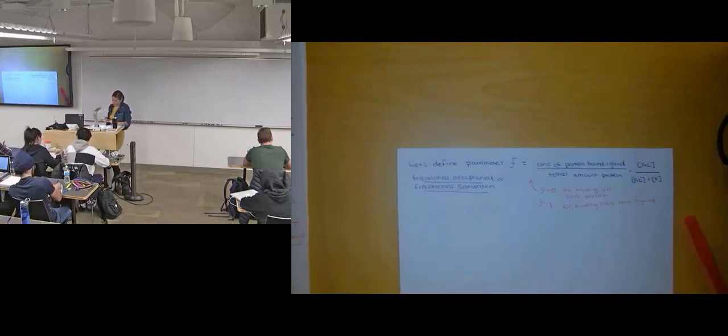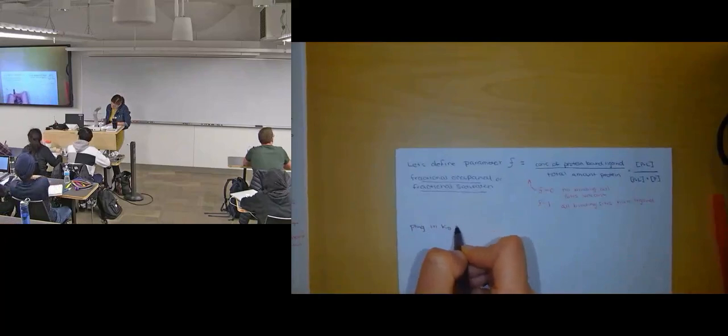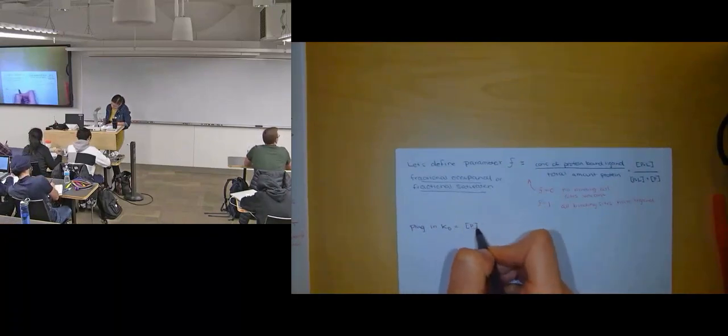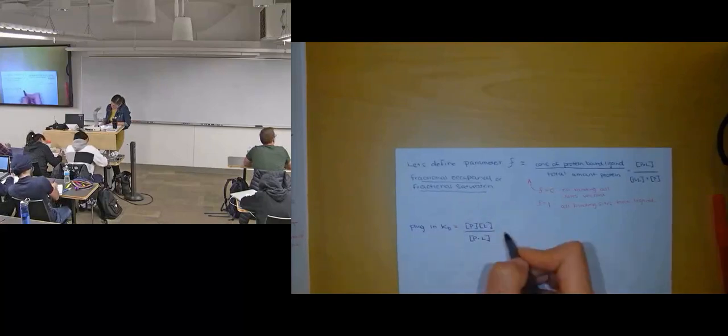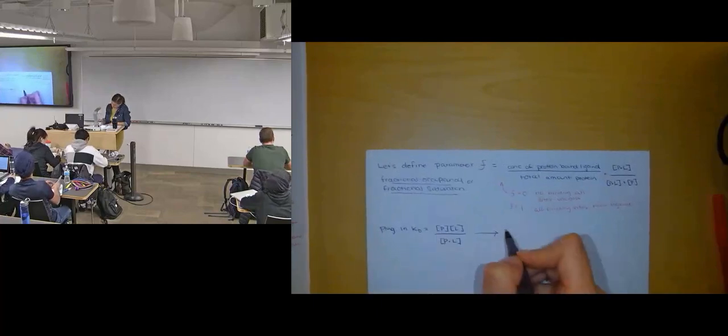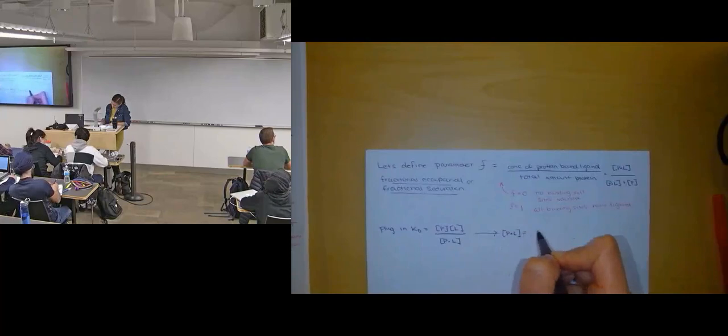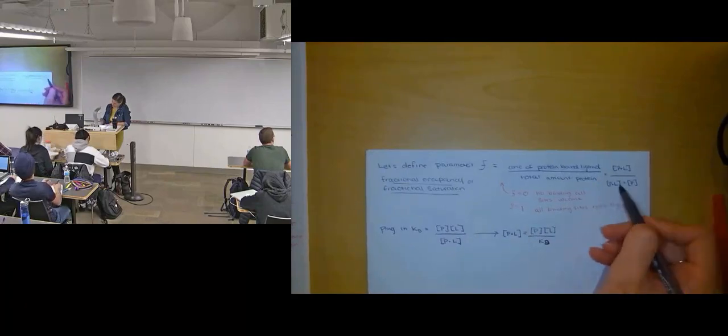What we want to do with our fractional occupancy equation is plug in our dissociation constant KD, which equals free protein times free ligand over the complex. We want to rearrange this with the complex by itself and then plug this piece into the equation.